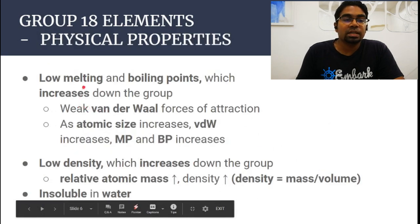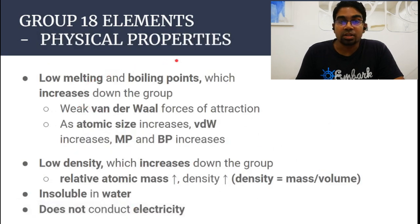This increasing atomic radius has an impact on the physical properties. Just to differentiate between physical properties and chemical properties: physical properties are things like melting point, boiling point, solubility, density, electrical conductivity, heat conductivity.